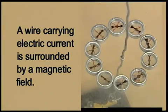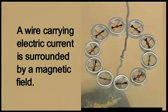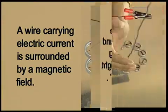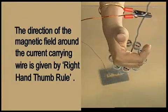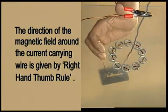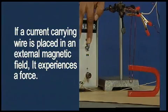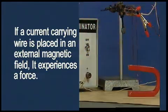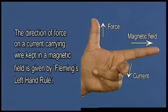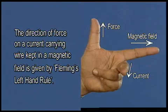Can you recall what you have learned today? A wire carrying electric current is surrounded by a magnetic field. The direction of magnetic field around the current carrying wire is given by the right hand thumb rule. If a current carrying wire is placed in an external magnetic field, it experiences a force. The direction of that force is given by Fleming's left hand rule.